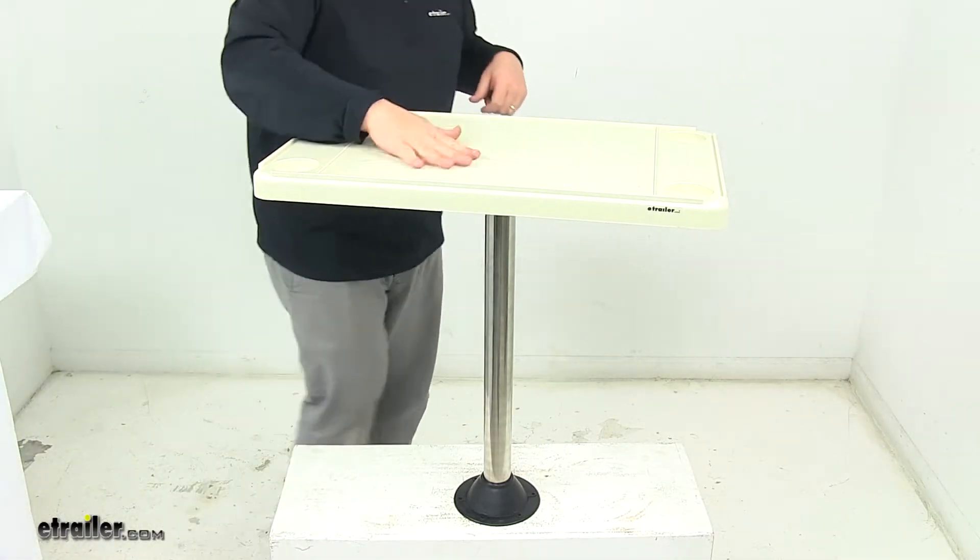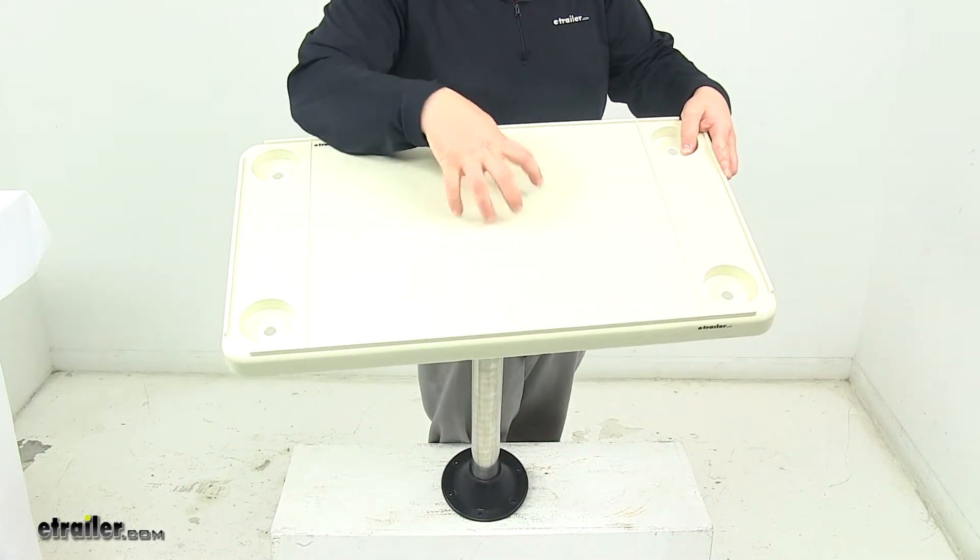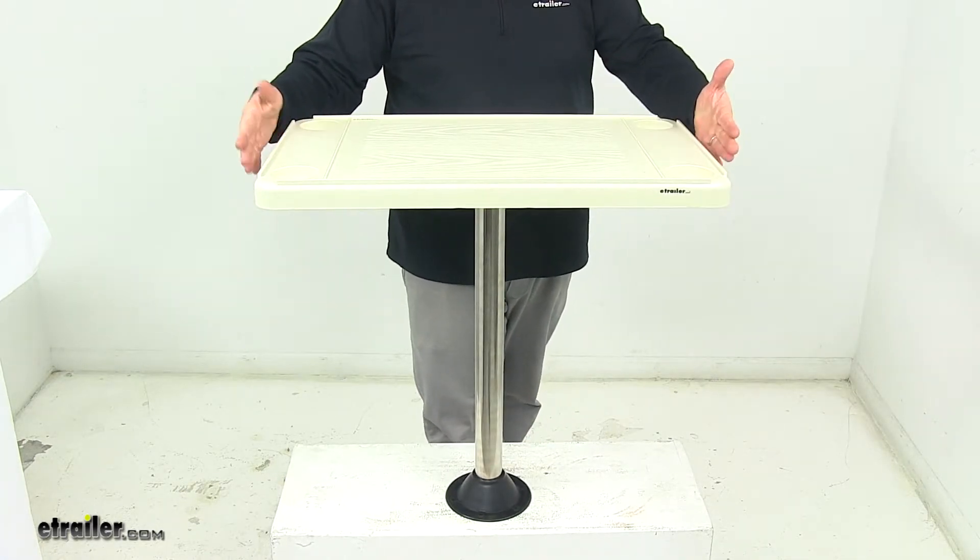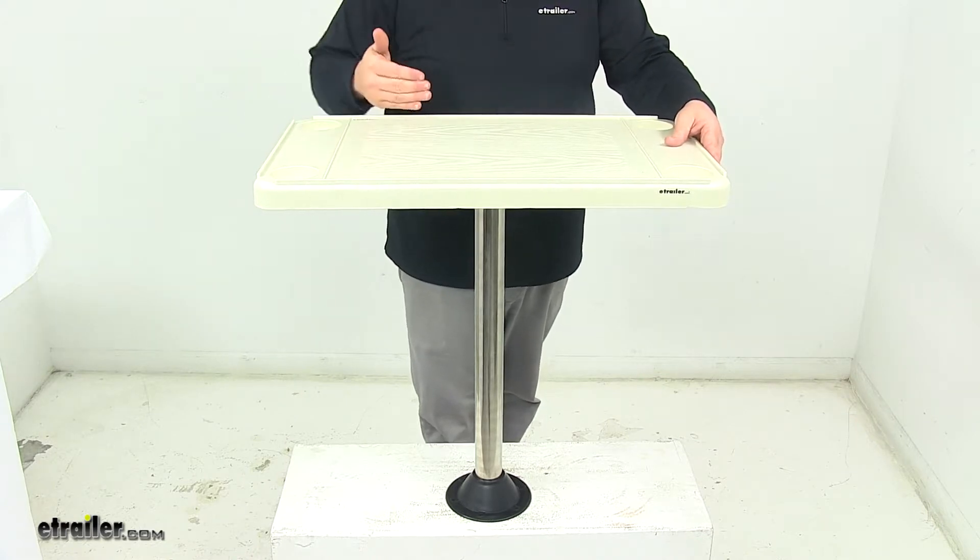Now this is like an off-white in color. On the top, it does have a nice wood grain pattern to it. When it comes to the table top dimensions, I measured edge to edge, going in this direction. That's 28 inches long by 16 inches wide.